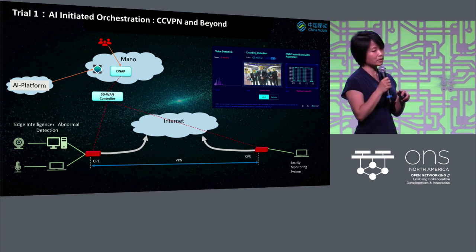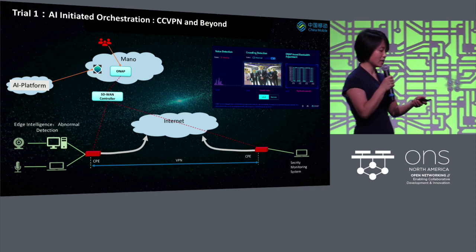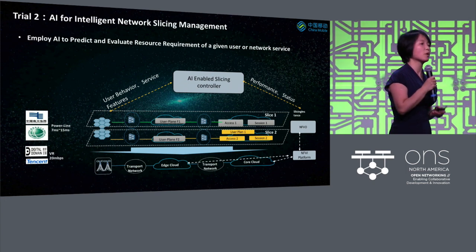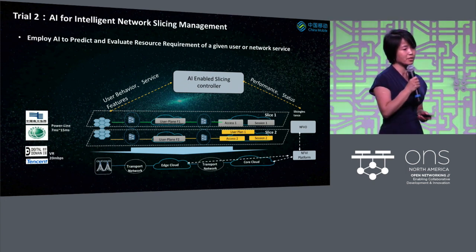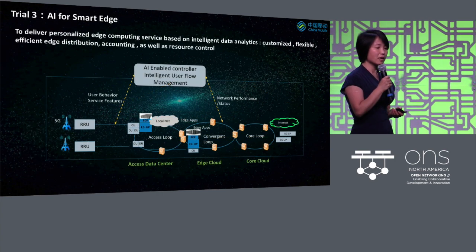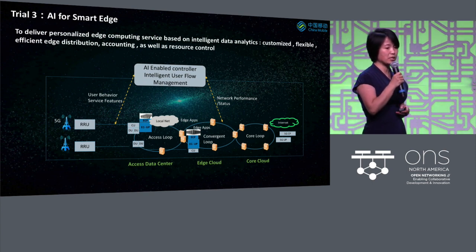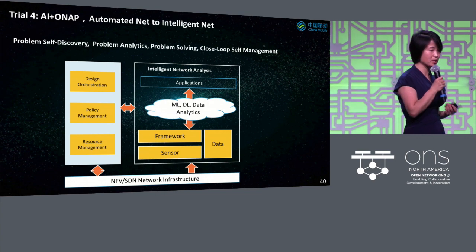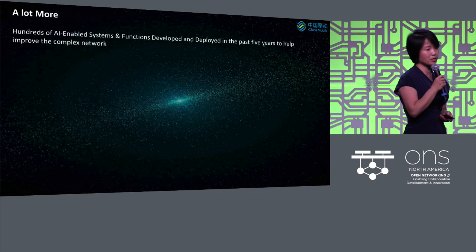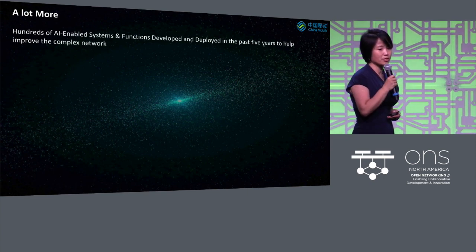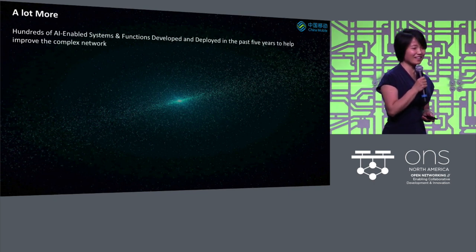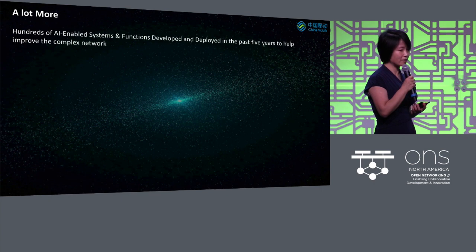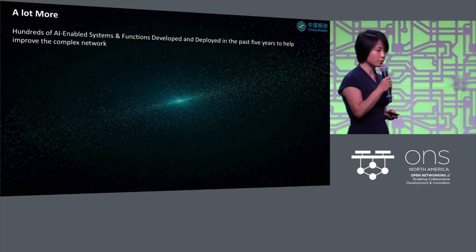We notify ONAP and then adjust the bandwidth automatically — getting AI to initiate the orchestration. This is AI for network slicing, one of our main developments to prepare for 5G. We are also thinking about how to systematically put AI into ONAP for the data analytics part to close the loop. To summarize, we have hundreds of AI-enabled systems and functions developed and deployed in the past couple of years to help improve the complex network.